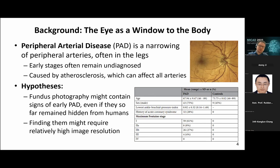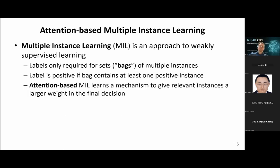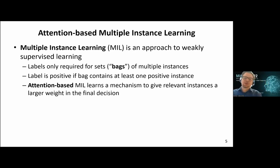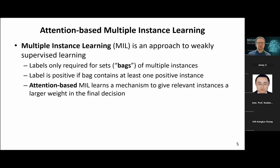Because the signs are probably quite subtle, we would need to process these images at high resolution without downsampling, as is done in many current image classification approaches. The technical approach we took was based on multiple instance learning. Multiple instance learning is an approach to weakly supervised learning: you have a set of items called instances which you don't label individually; instead you collect them into a bag and label only the overall collection. A bag is labeled as PAD-positive if it contains at least one positive instance — one sample showing a sign of PAD.